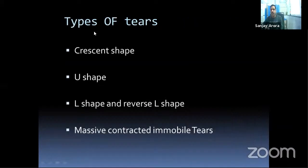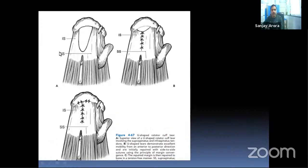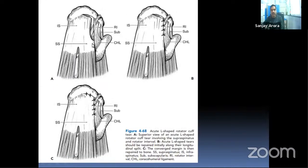Based on tear shape, tears can be classified as crescent-shaped, U-shaped, L-shaped, reverse L-shaped, or massive contracted immobile tears. Crescent-shaped tears have greater mediolateral than anteroposterior mobility. U-shaped tears have greater anteroposterior than mediolateral mobility. L-shaped and reverse L-shaped are distinct described entities, and massive contracted immobile tears represent chronic, fixed patterns.